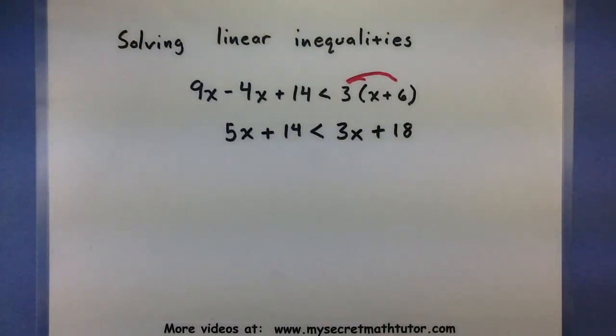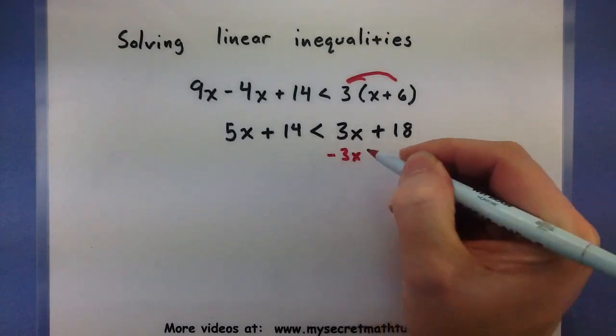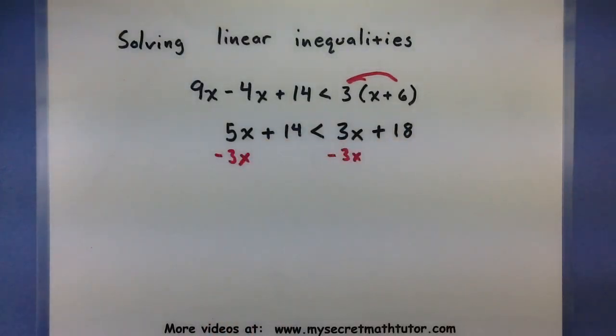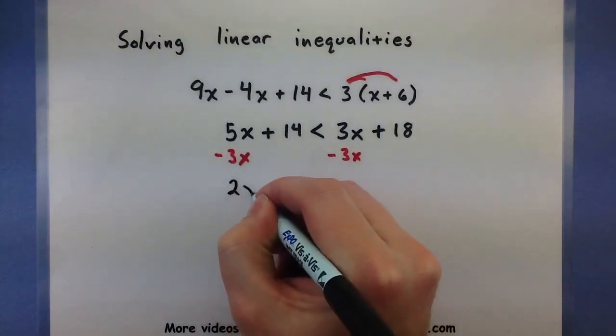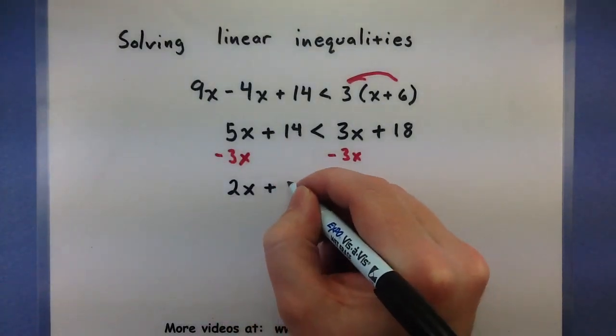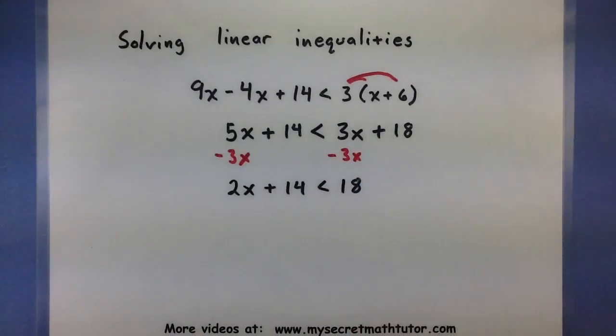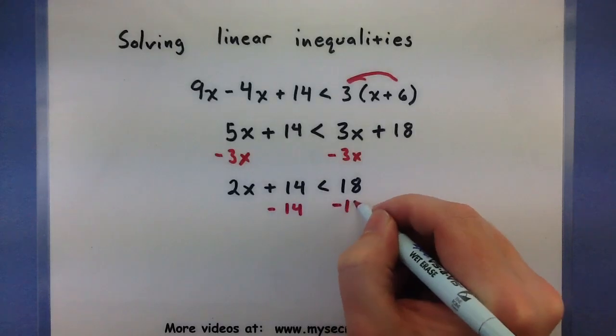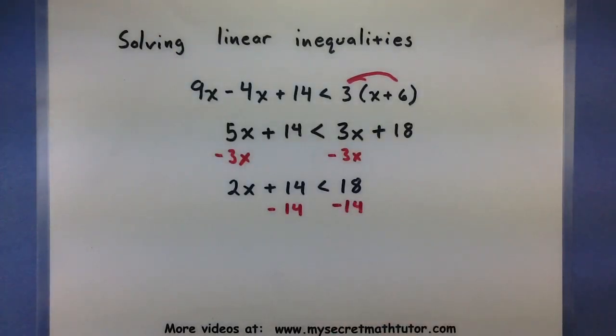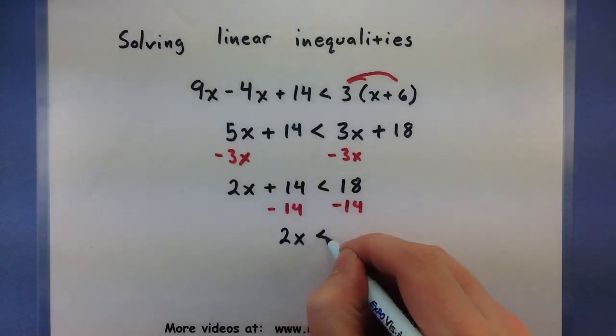Alright, that looks pretty good. How to get them even more together, let's subtract our 3x from both sides. So here's 2x plus 14 is less than 18. Alright, just a few more steps. We'll subtract 14. So 2x less than 4.